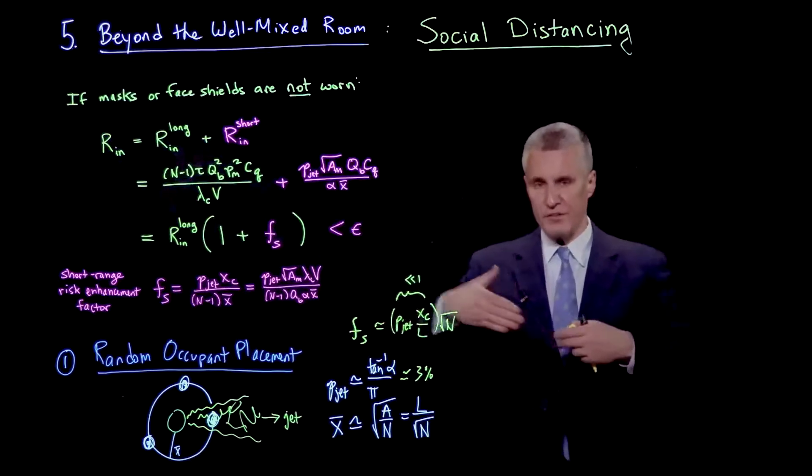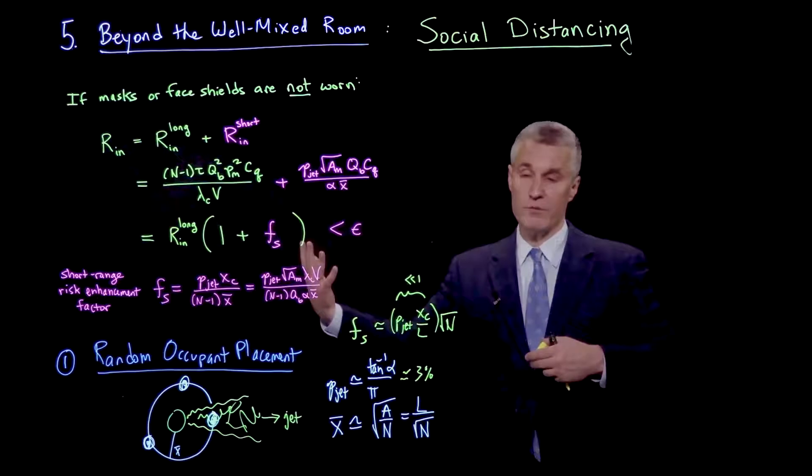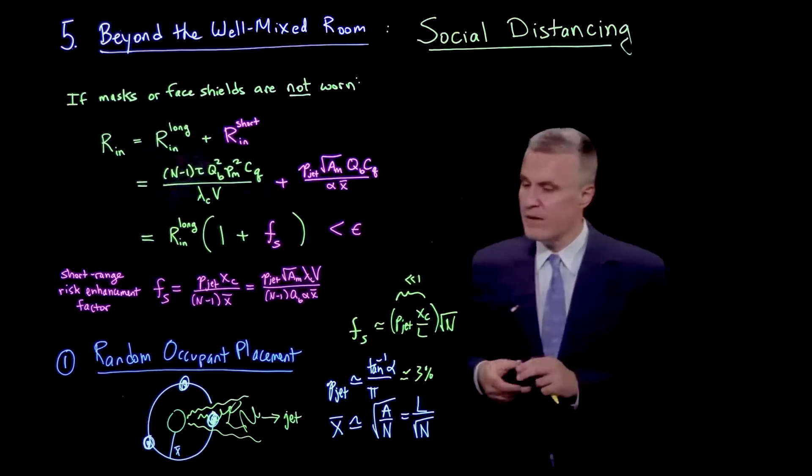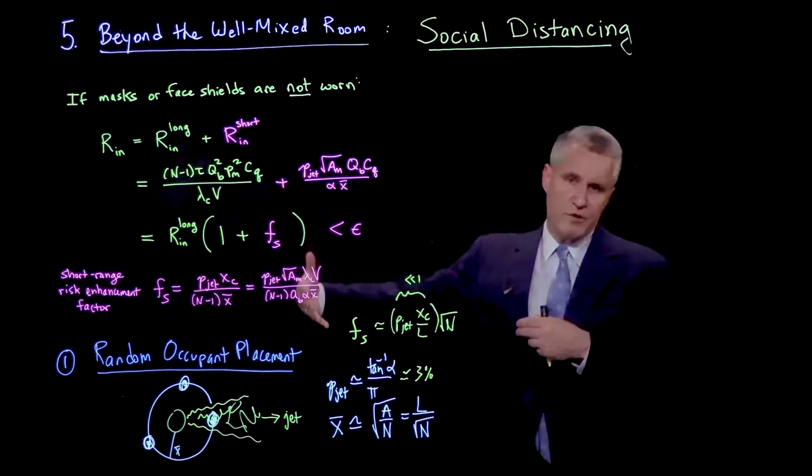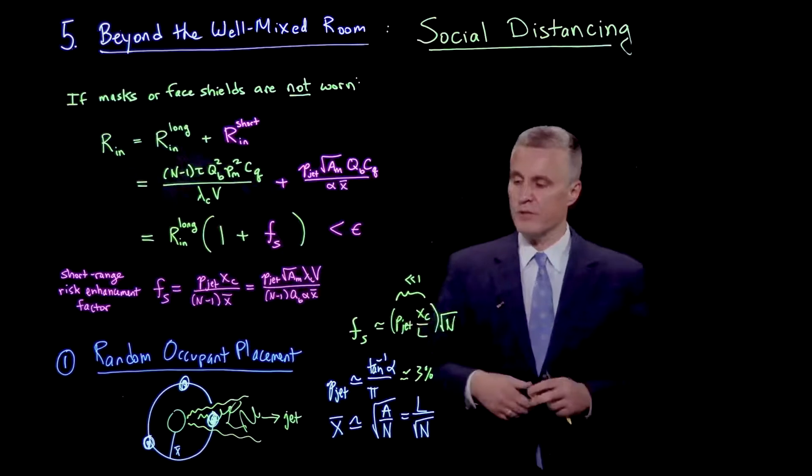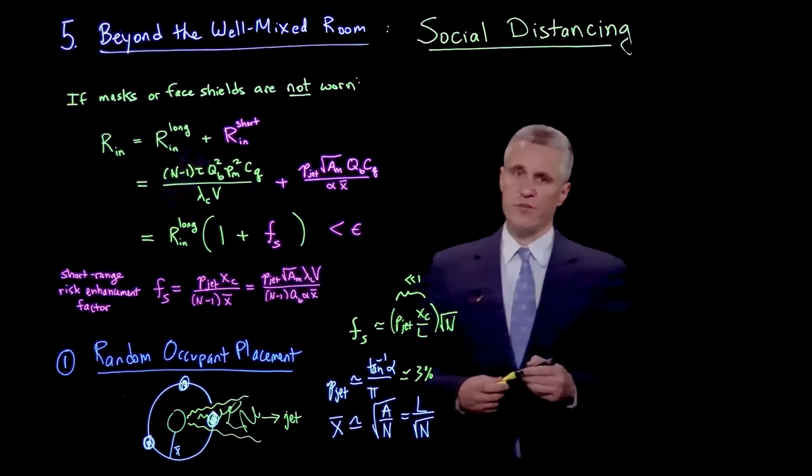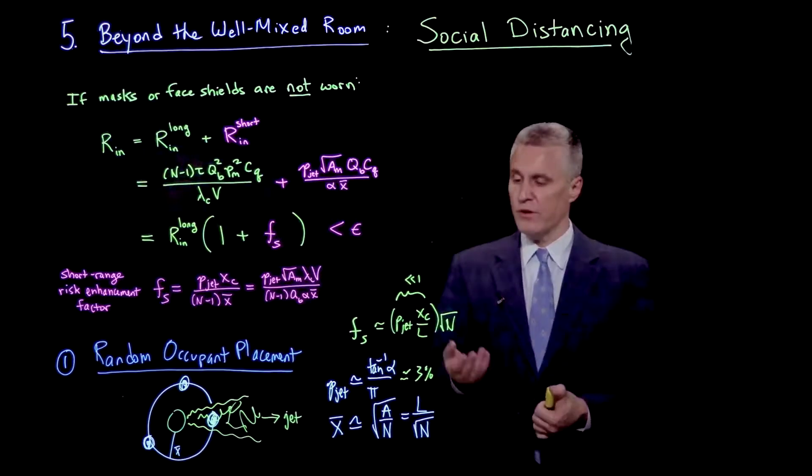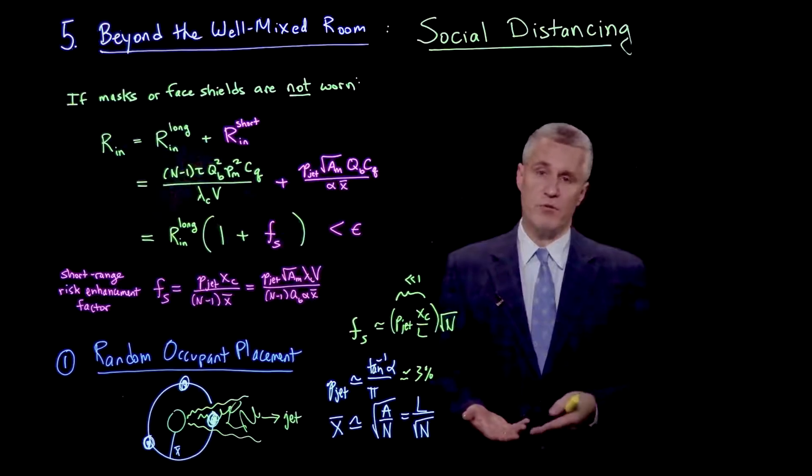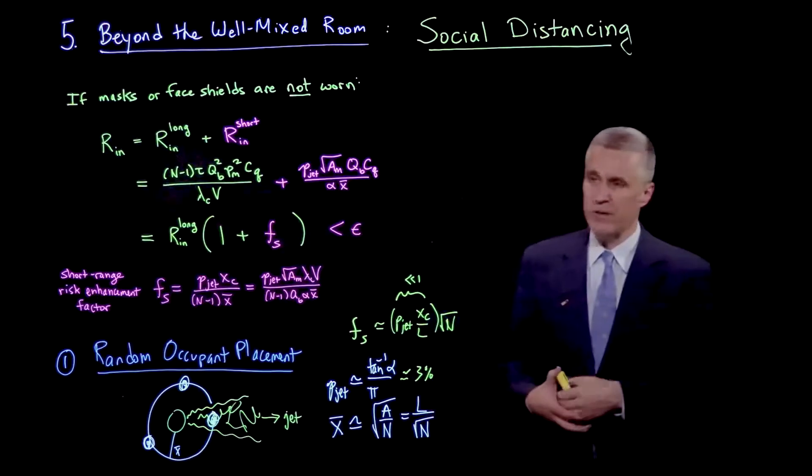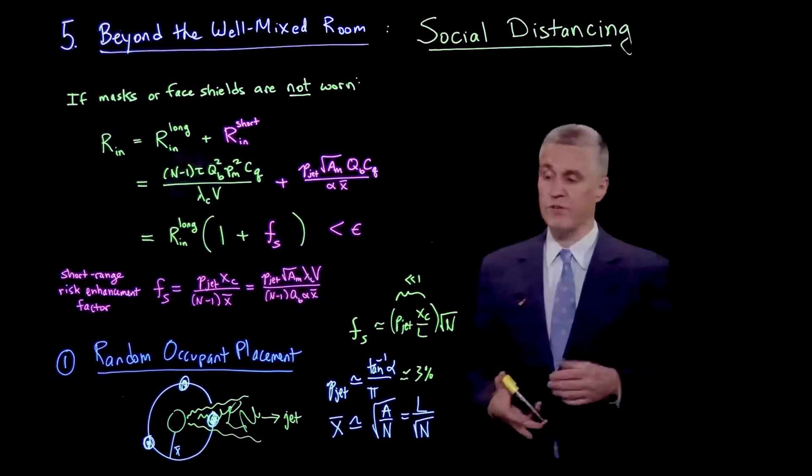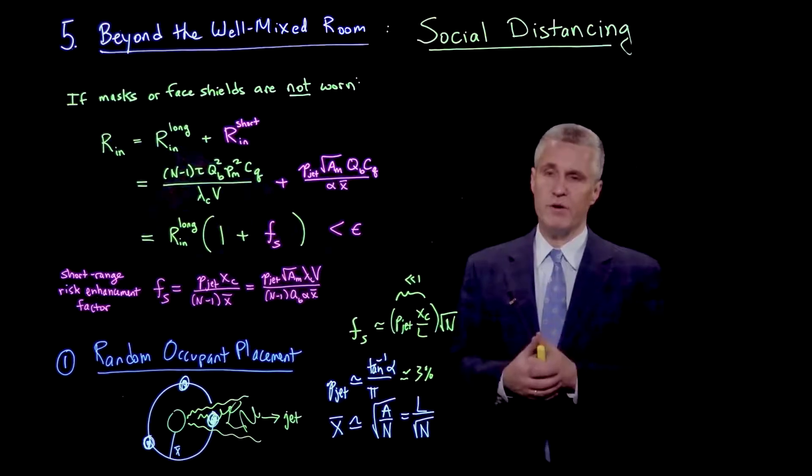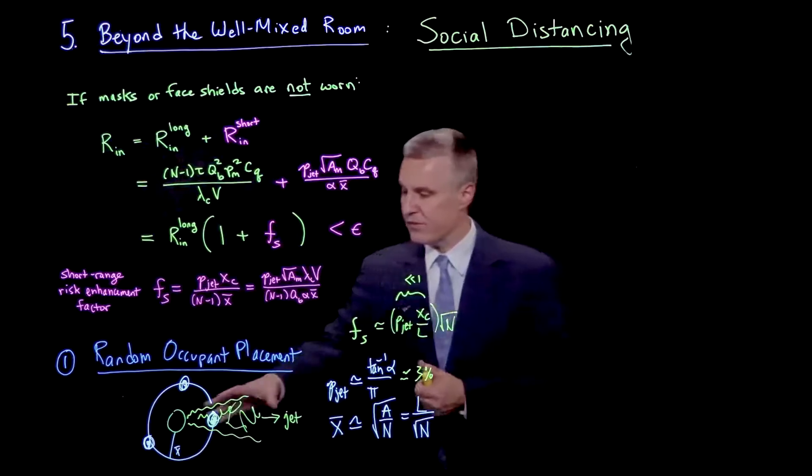We've already discussed that xc, the distance where the concentration in the jet starts to match that of the ambient, depends on the conditions of the room and the ventilation and other factors. But roughly speaking, xc is typically smaller than the size of the room. So you see that in a random situation, the short-range transmission starts to become important only when the number of people becomes large. And it grows like square root of n. There's a certain point which might be at n equals 20, or 50, or 100, depending on the space, where the short-range risk is larger than the risk of the background airborne transmission. And that's coming from random placement.